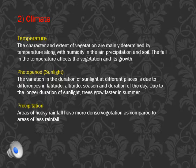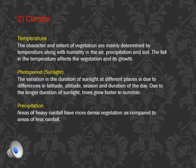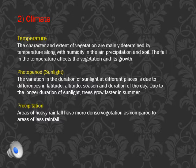Photoperiod is nothing but sunlight. The variation in the duration of sunlight at different places affects vegetation. Due to differences in latitude, altitude, season, and duration of the day, sunlight varies. Due to longer duration of sunlight, trees grow faster in summer compared to June and September where there is less sunlight. So photoperiod plays a very important role in growing natural vegetation.